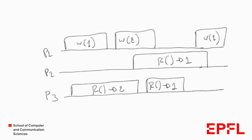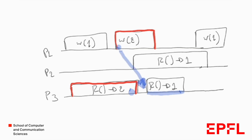Could this execution be generated by an atomic register? We can see that P3 reads 2 here and P1 writes 2 here, so the linearization point of write 2 must precede the linearization point of read 2. But this means the linearization point of the second read — which returns 1 — comes after the write of 2. So there is no way P3 could read 1 in an atomic register.